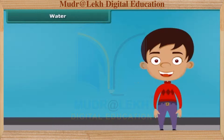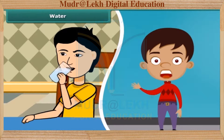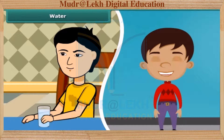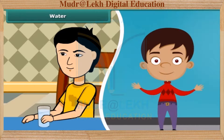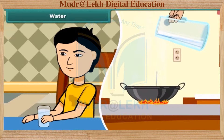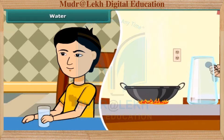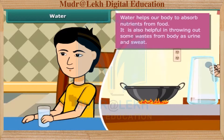Now let us know about water, which is also an important constituent of our food. A body gets most of the water in the form of liquid. In addition, we also add water while cooking the food. Water helps our body to absorb nutrients from the food. It is also helpful in throwing out some wastes from the body as urine and sweat.